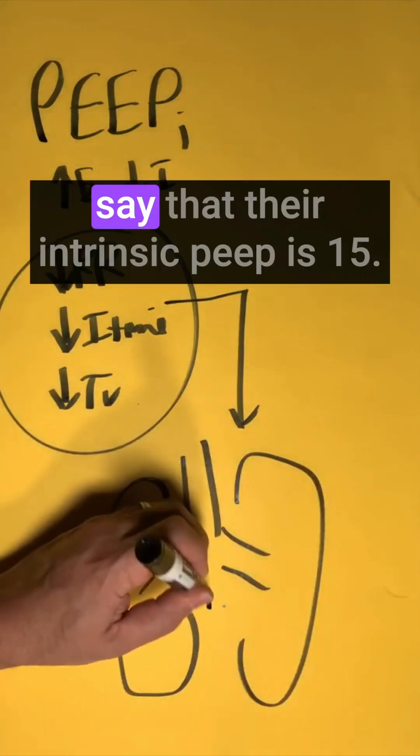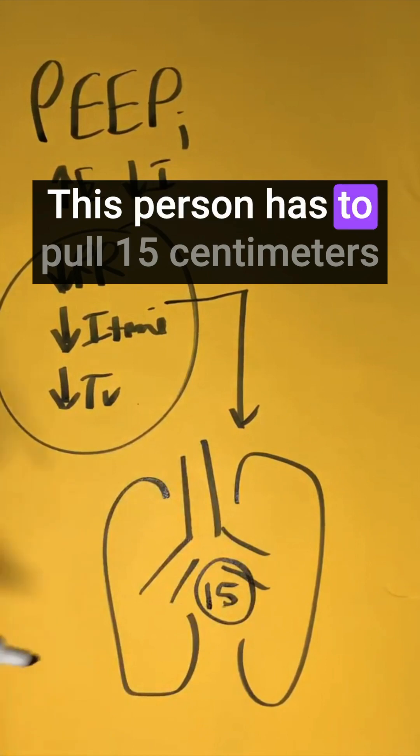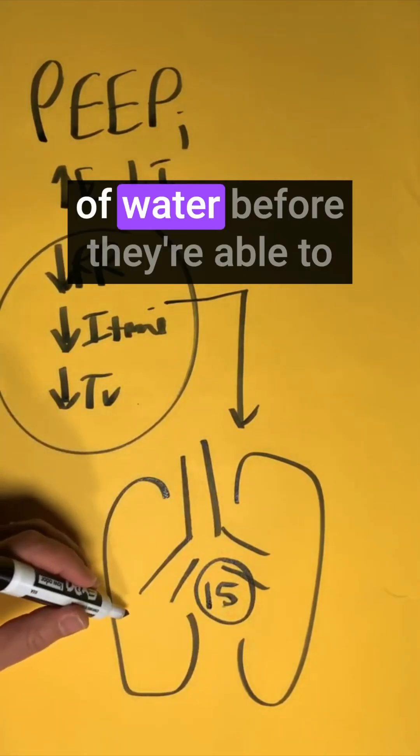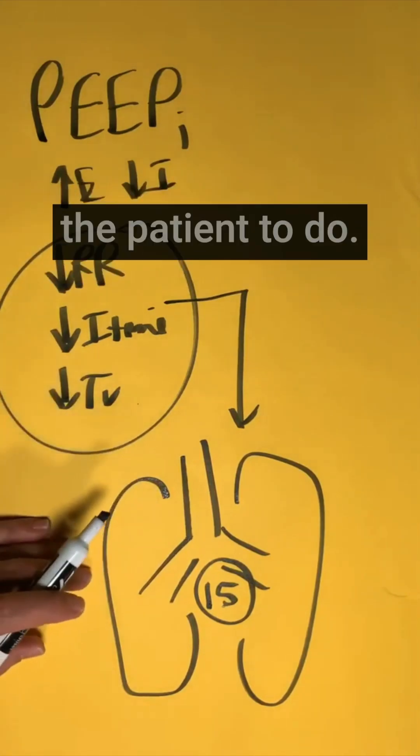So let's take this patient and let's say that their intrinsic PEEP is 15. This person has to pull 15 centimeters of water before they're able to trigger the breath. This is going to be very hard for the patient to do.